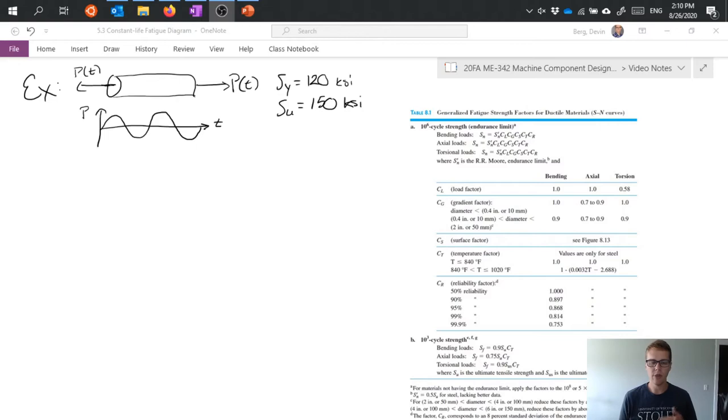So the first thing that we need to start working on is setting up our SN curve and setting up what we want to know or what we know about our SN curve. To do that I mentioned in an earlier video that we need to know our 10 to the third limit and if we refer to the textbook figure 8.11 gives us that for axial loading we have a 10 to the third limit of 0.75 Su.